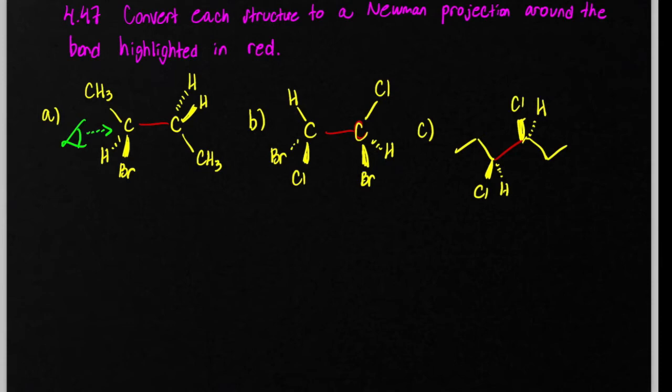And so remember, when you set up your Newman projection, the back carbon is going to be a circle and the front carbon is going to be a dot.